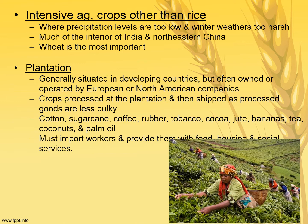Plantations, the only commercial agriculture type in less developed countries, are generally found near the equator but are largely owned and operated by companies based in Europe and North America. Crops processed at the plantation are less bulky to ship. Plantation crops include cotton, sugar cane, coffee, rubber, tobacco, cocoa, jute, bananas, tea, coconuts, and palm oil. Plantations must import workers and provide food, housing, and social services. Unfortunately, forced labor — including modern-day slavery and child labor — is still occurring in many of these places.